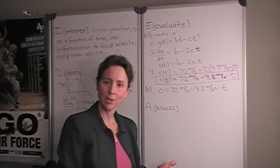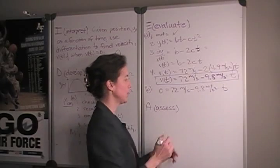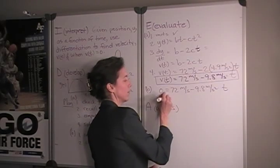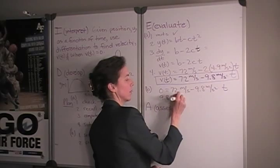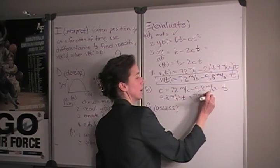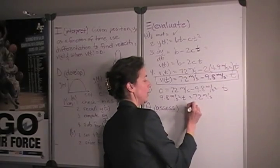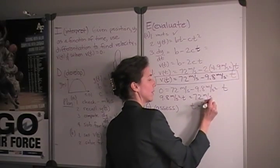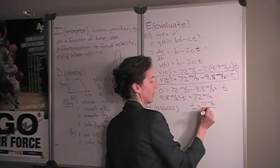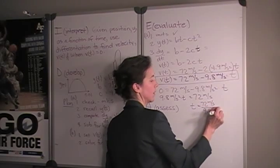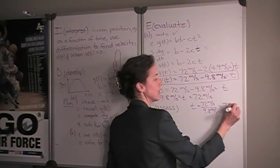If we add 9.8 meters per second squared times time to both sides, then divide through by 9.8 meters per second squared, we get the time is equal to 7.3 seconds.